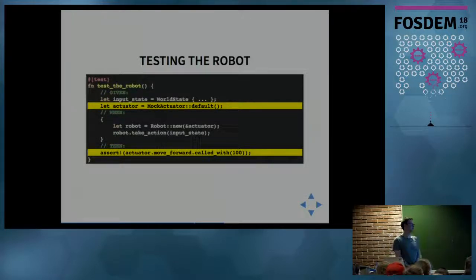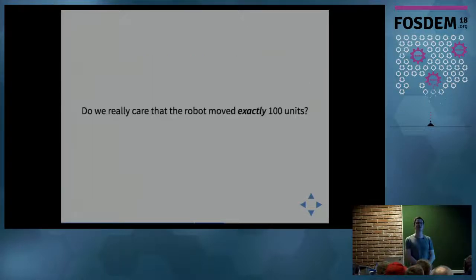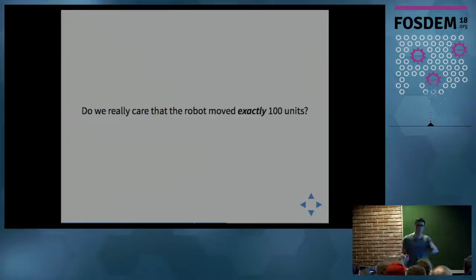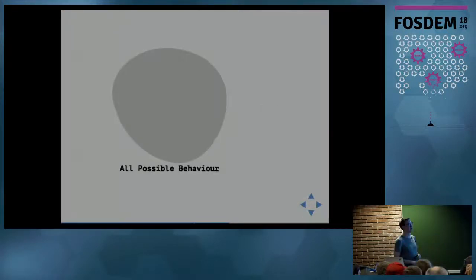The issue with this specific example is robots and decision making is quite complicated and nuanced. Do we really care that the robot moved exactly 100 times? Is that something we actually care about? Do we care that it moved forward a little bit or within a range? We might not care that it's exactly 100 units. If you imagine the space of all possible behavior the robot can take, or the code under test in a more generic fashion, and this is the expected behavior, what we've just done is we've tightened the assertion way too much.